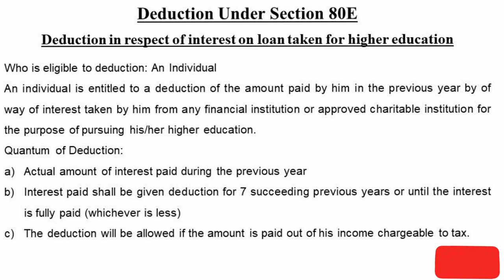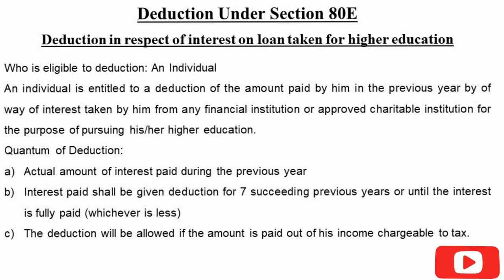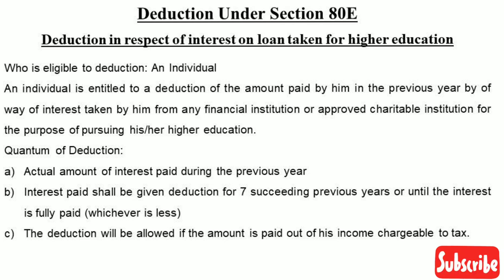The deduction is available to an individual. It doesn't have to be only for the individual's own education — it also covers education of a dependent, such as a spouse or a child. Higher education is required for eligibility.